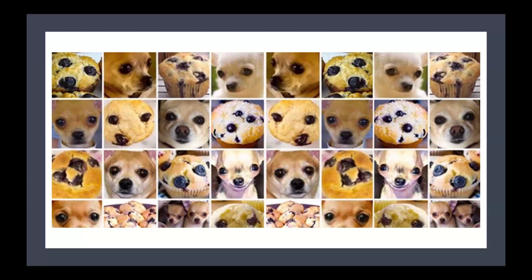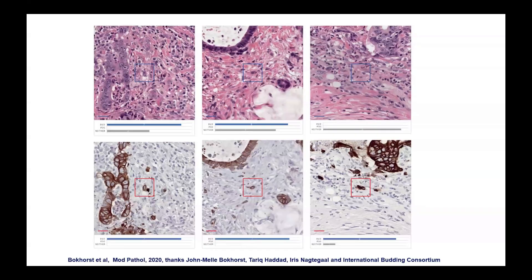When the same slide is shown to different pathologists and they are asked to identify whether an object is a bud, a poorly differentiated cluster (PDC, five or more cells without glandular shape), or neither, significant inter-observer variability emerges — especially on H&E staining.